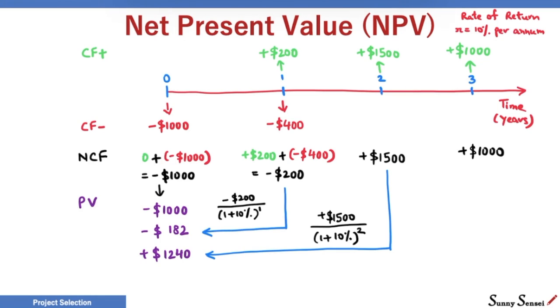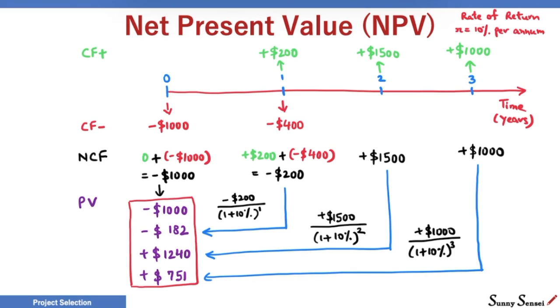Finally, for year 3, the present value is plus $751. Let's add all these numbers. We get plus $809. This is the net present value of this project.